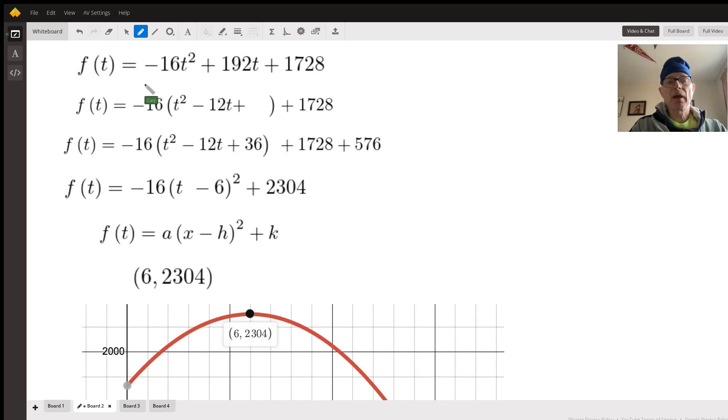Maria sent us in this equation without any questions attached to it. However, there are several interesting questions that arise from this situation. It's a quadratic function referring to a thrown object thrown from a building 1,728 feet high.